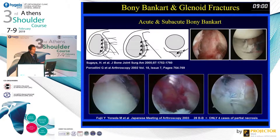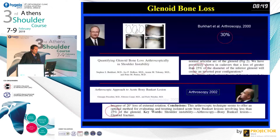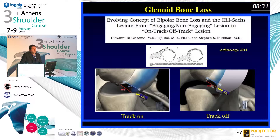For acute and subacute bony Bankart lesions, we can repair with a suture anchor technique — this is not a problem. The problem is chronic cases with bony erosion. The critical threshold has changed over the years, starting from 30% in 2000, and now the most recent reviews suggest 10–15% is the critical point for fixation with soft tissue alone. We also have to look at both sides simultaneously, thanks to the work of Ito, Di Giacomo, and others who showed we must combine the two bone defects.